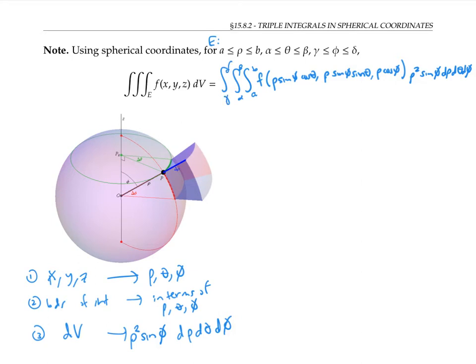This same process works even if our bounds of integration are not all constants. For example, if the bounds on rho had not been constants a and b, but had been functions of theta and phi, I could still write out the same thing — the bounds would just also be functions of the other variables.